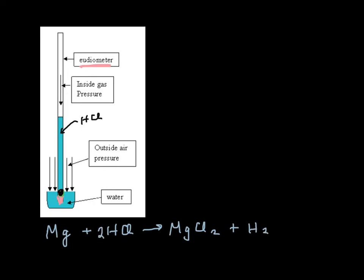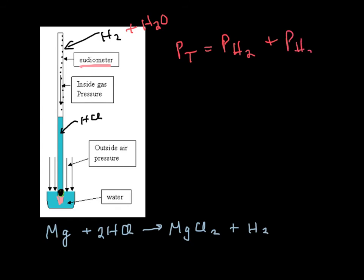So what happens is the hydrogen gas bubbles up here, and up here you've got some hydrogen gas. But we don't just have hydrogen gas, right? What else do we have? We have water vapor. So there's hydrogen gas there and there's water vapor. So if we can figure out the total pressure inside this tube, we'll know it's equal to the pressure of the hydrogen plus the pressure of the water.